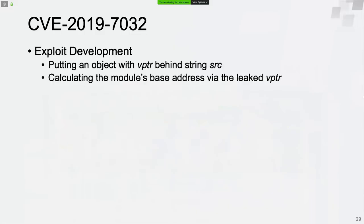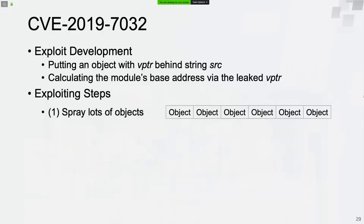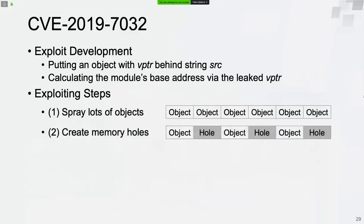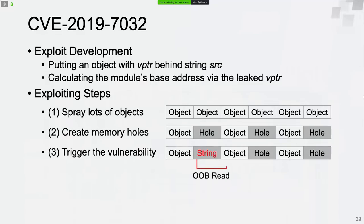The exploitation approach is straightforward. We put an object with a virtual function table pointer behind the source string, then read the pointer by triggering the vulnerability. The pointer is used to calculate the base address of the module. The exploiting steps: first, spray lots of objects that have a virtual function table pointer; then free half of the sprayed objects to create memory holes; finally, trigger the vulnerability to leak the virtual function table pointer of one of the sprayed objects.